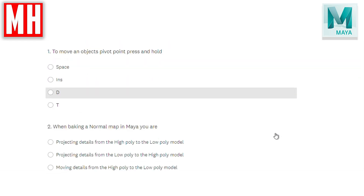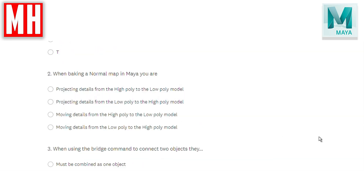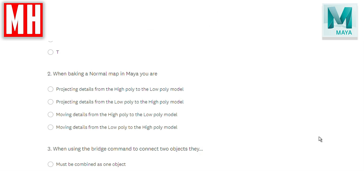Question number two: when baking a normal map in Maya, you are — projecting details from the high poly to the low poly model, projecting details from the low poly to the high poly model, moving details from the high poly to the low poly model, or moving details from the low poly to the high poly model? When you're baking a normal map, you are not moving anything, you're projecting. So what you're doing is projecting details from the high poly to the low poly model. The correct answer is A.